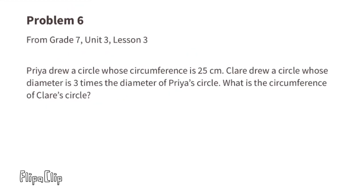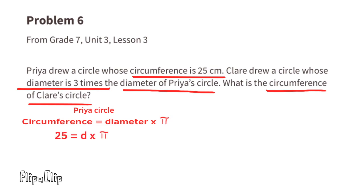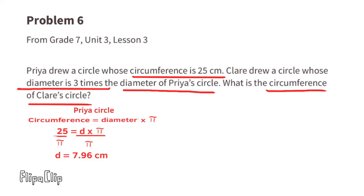Problem number six, from 7th grade Unit 3 Lesson 3: Priya drew a circle whose circumference is 25 centimeters. Claire drew a circle whose diameter is three times the diameter of Priya's circle. What is the circumference of Claire's circle? Priya's circumference equals diameter times pi, so 25 centimeters equals diameter times pi. Dividing both sides by pi gives us a diameter of approximately 7.96 centimeters. Claire's diameter is three times that: 3 times 7.96 equals 23.88 centimeters.